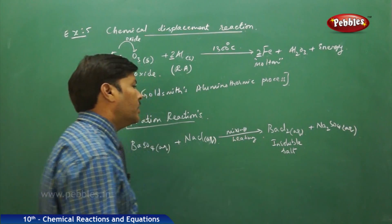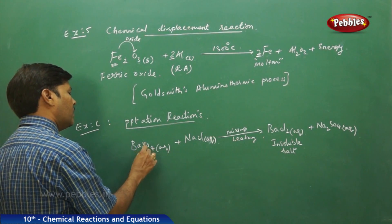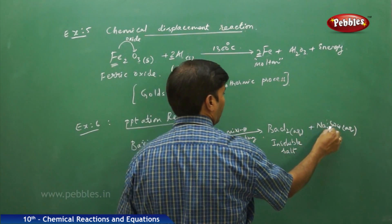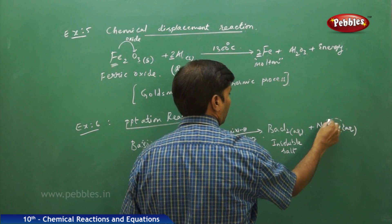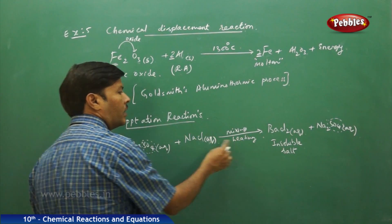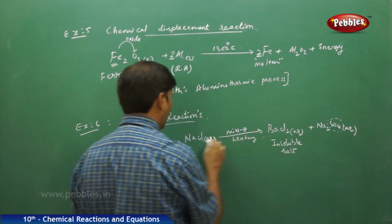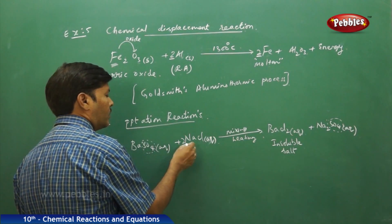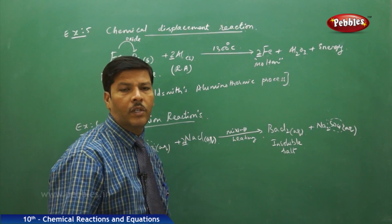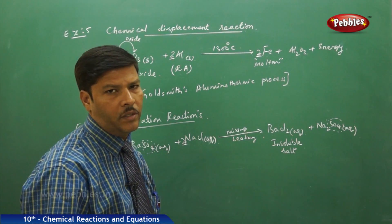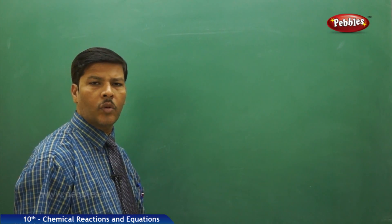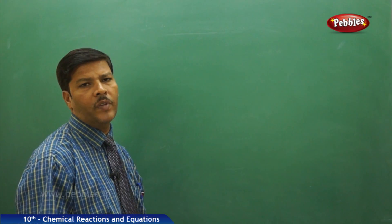To balance the precipitation equation: we have one sulphate on each side — sulphates are balanced. We have two sodiums on the reactant side and two sodiums on the product side. We need two chlorines on the product side, so place two as a molar coefficient beside sodium chloride — the reaction is balanced. We will now switch to the next topic of chemical reactions.